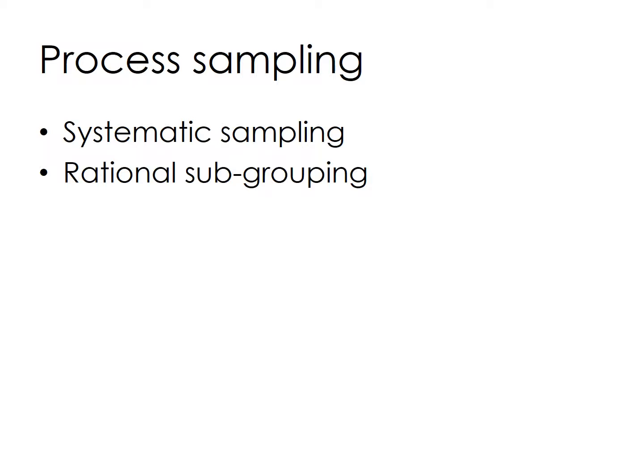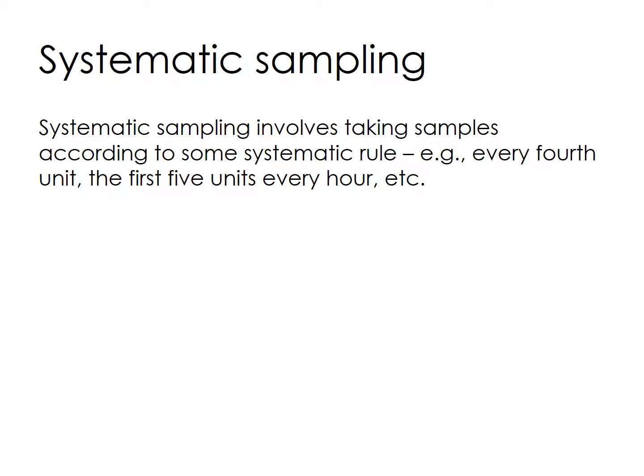Systematic sampling is typically used in process sampling situations when data is collected in real time during process operation. Systematic sampling involves taking samples according to some systematic rule — for example, every fourth unit, the first five units, every hour, etc. For example, the manager of a billing center is using systematic sampling to monitor processing rates at random times around each hour.